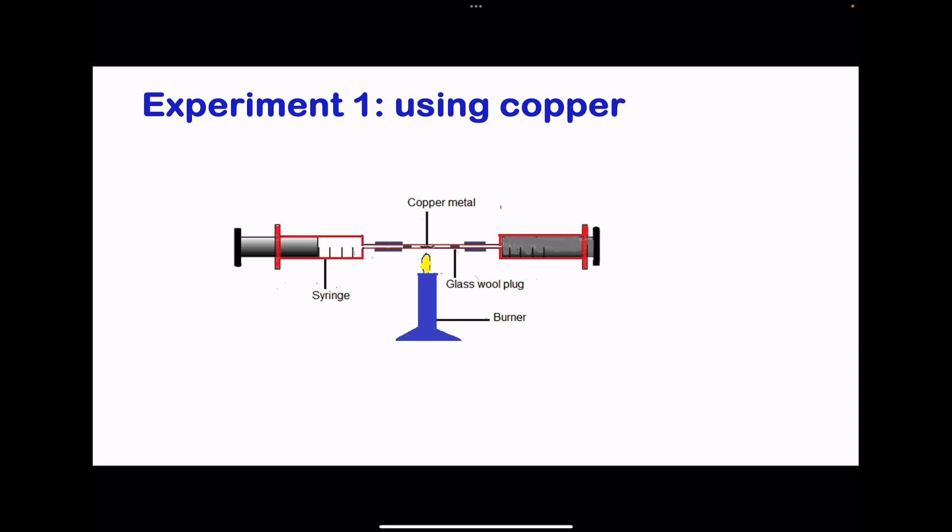The first one is an experiment using copper. In this experiment, two gas syringes are used. One starts off with 100 centimeters cubed, which is this one on the left. It's going to begin with 100 centimeters cubed, while this one is going to be 0 centimeters cubed.